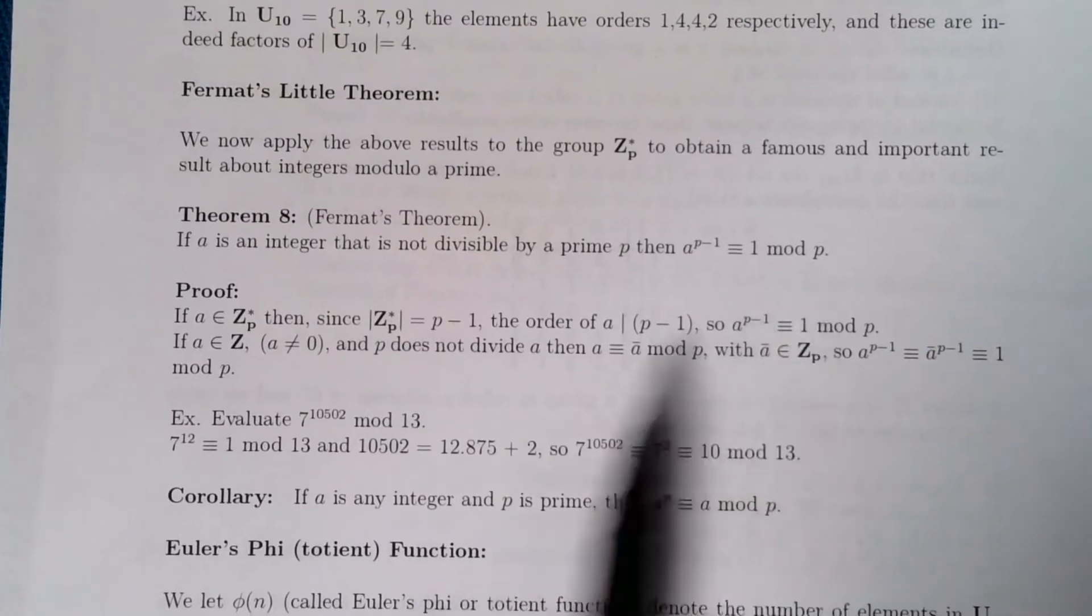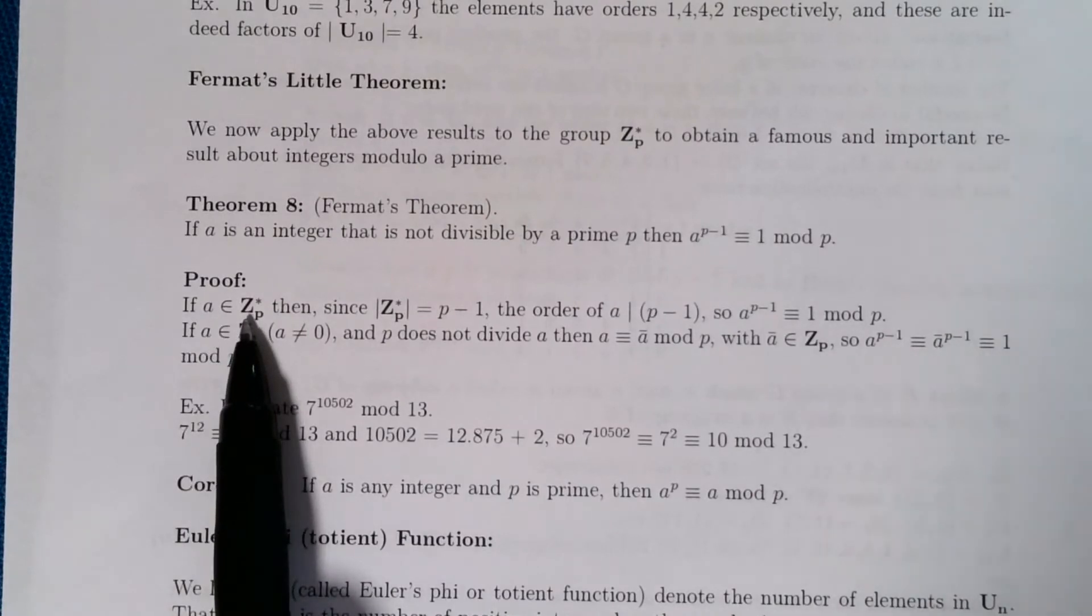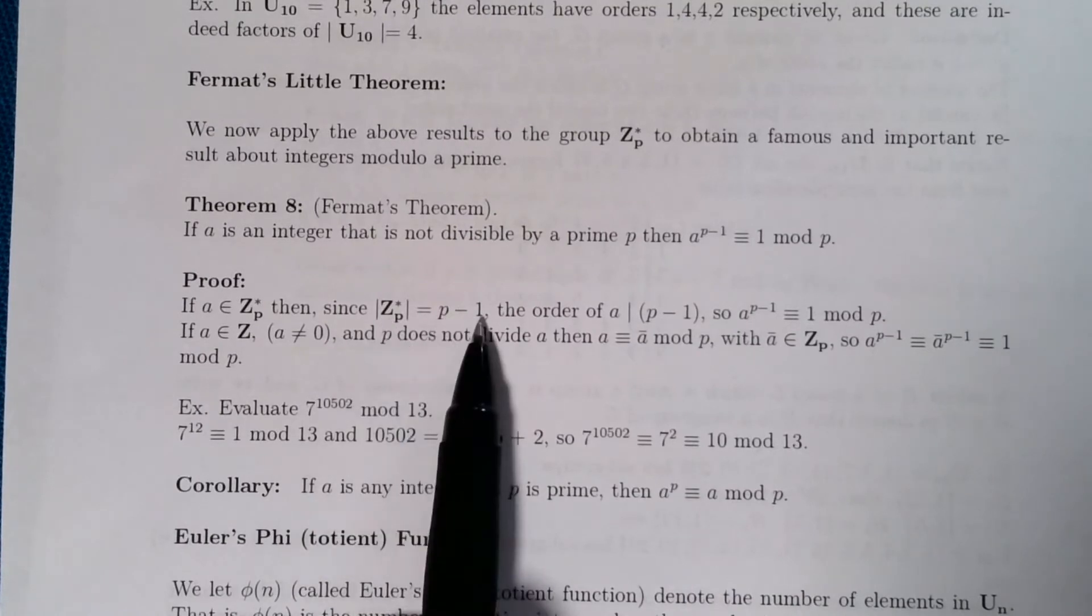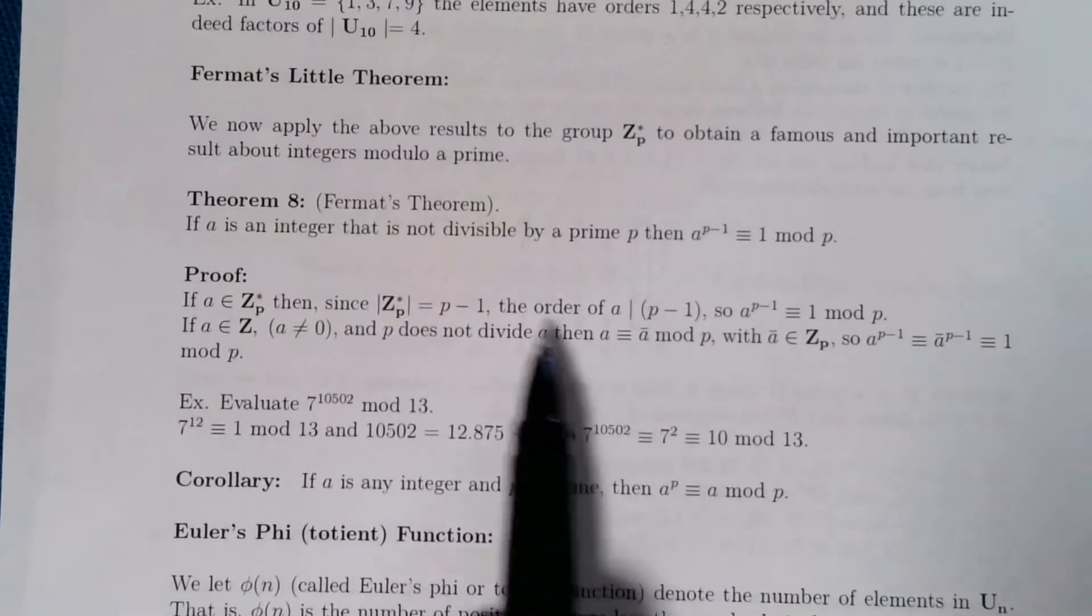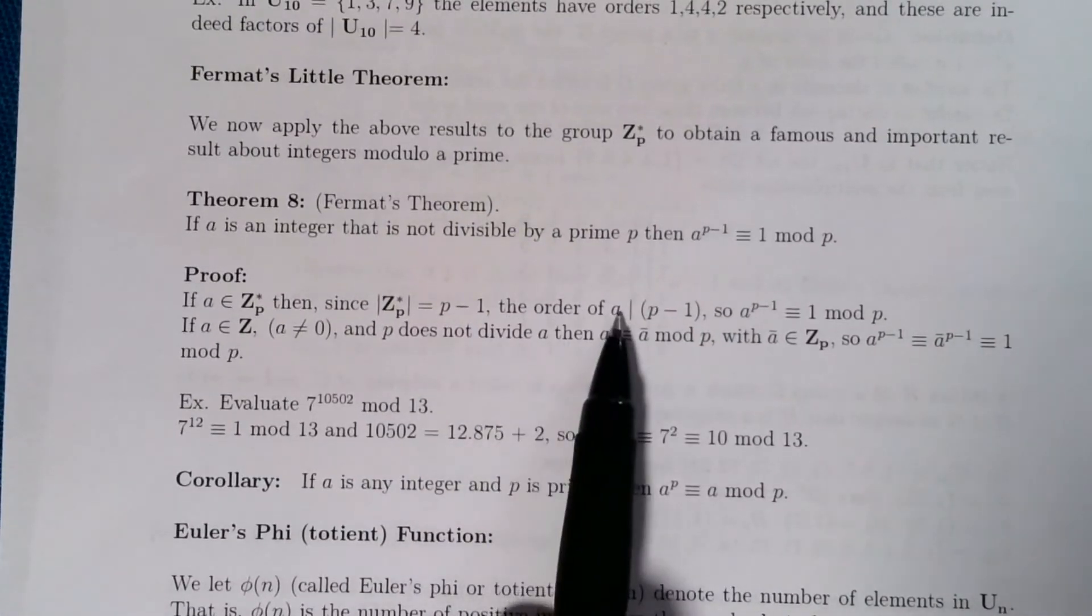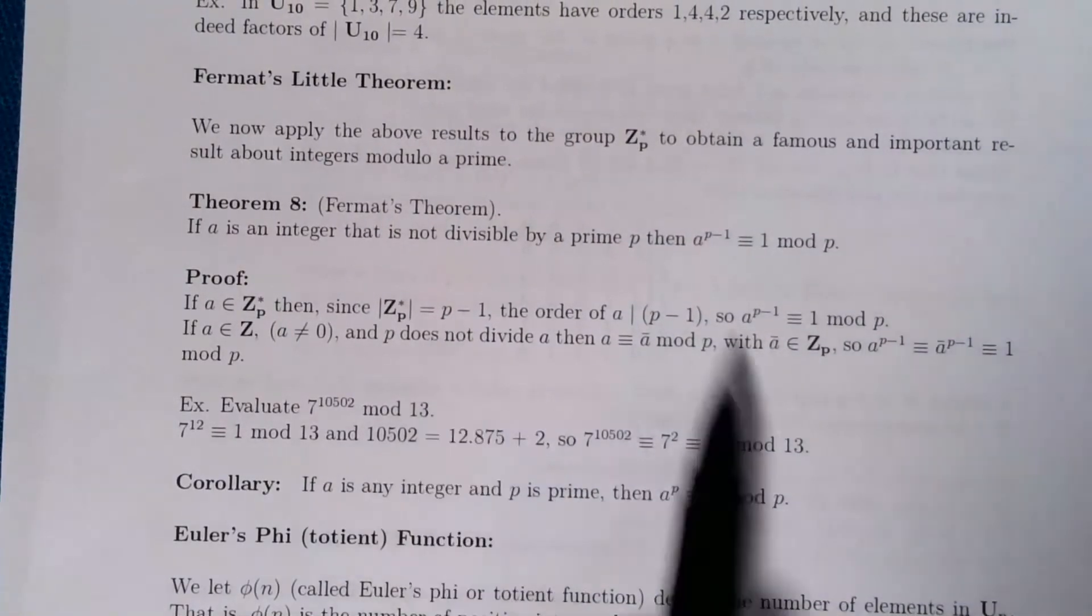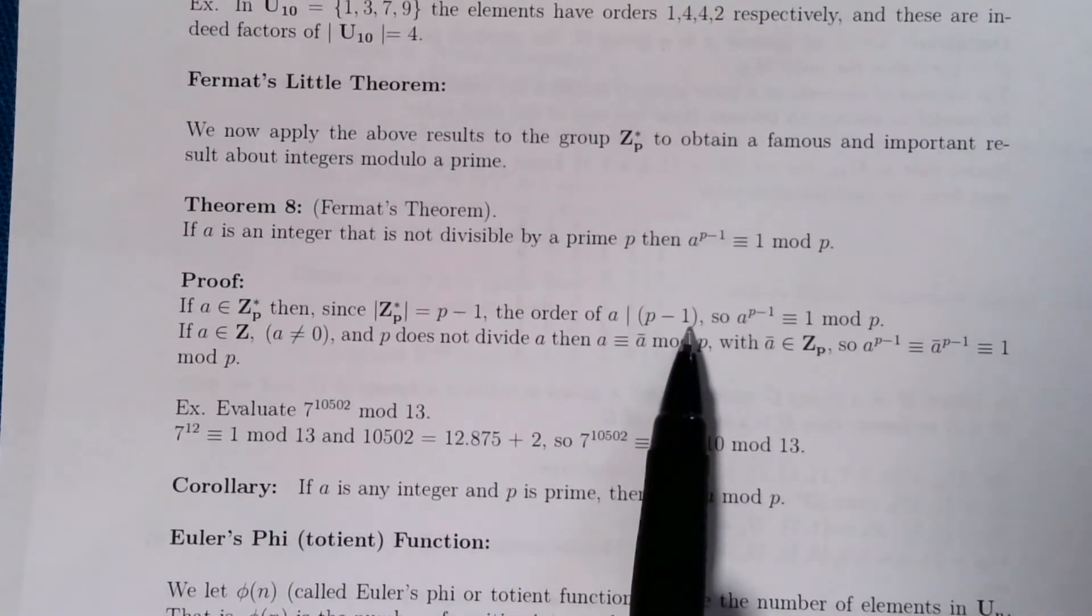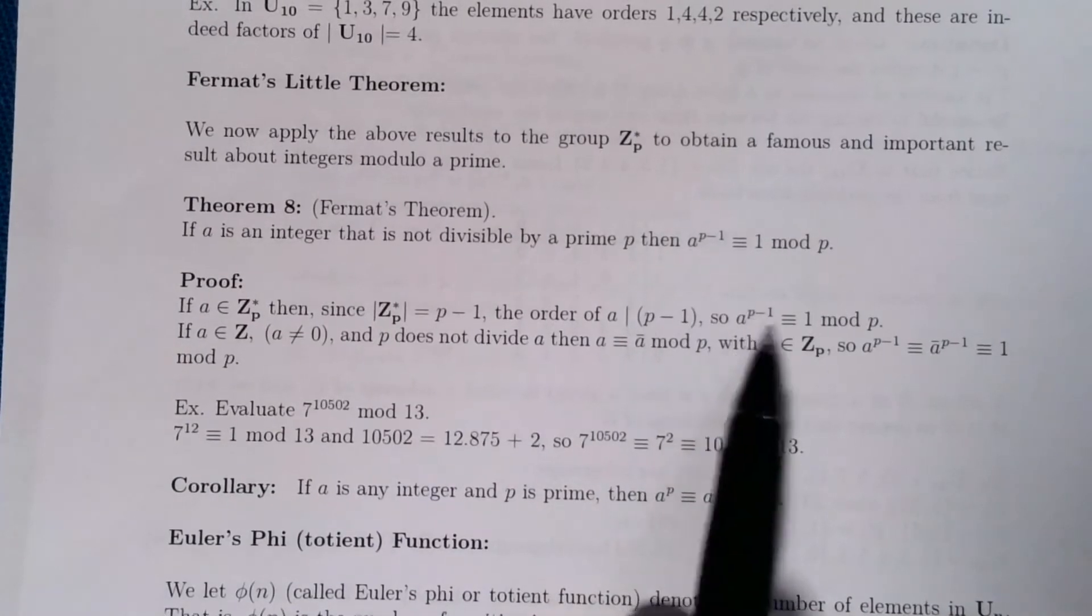The proof of this now is very easy because of Lagrange's theorem. So we take an element a in Z_p star. The size of this group is p-1 because we're taking out 0. And the order then of any element has to divide the order of the group by our corollary to Lagrange's theorem. So that says the order of a is a factor of p-1, and that simply means then if I raise a to the power of p-1, I get 1 modulo p.